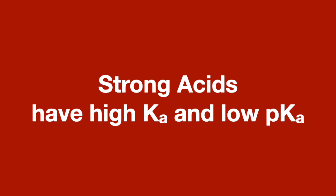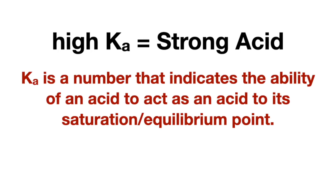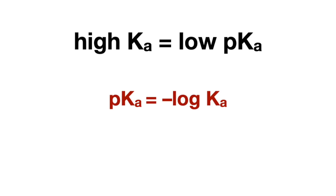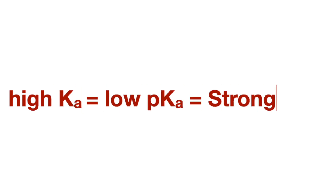And lastly, if values are given to indicate strength of acids, know that strong acids have a high Ka and a low pKa. Ka is simply a value that indicates the ability of an acid to act as an acid, so a high Ka equals a strong acid. A high Ka mathematically equals a low pKa, which means high Ka and low pKa equals a strong acid, and the higher the Ka and lower the pKa, the stronger the acid.